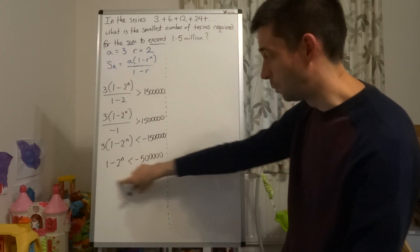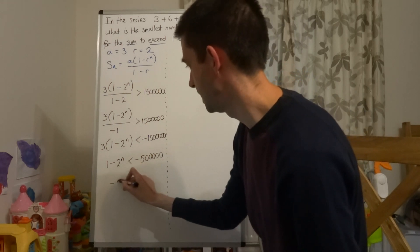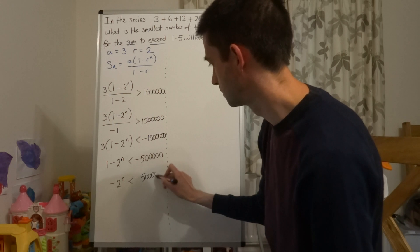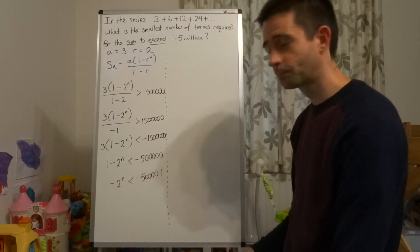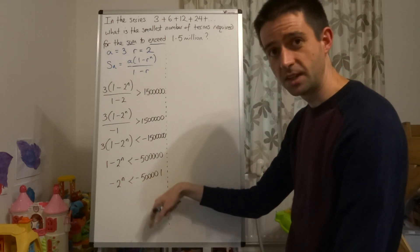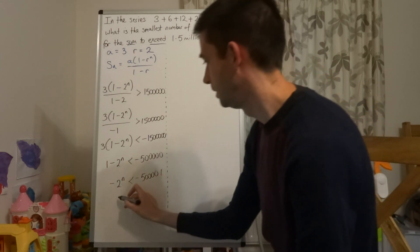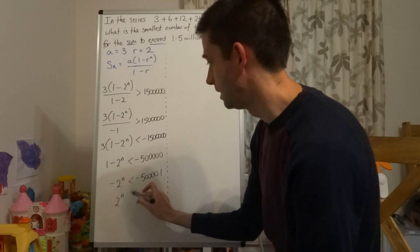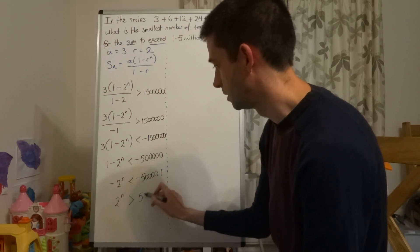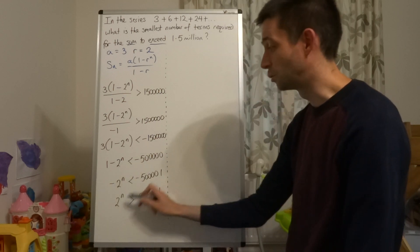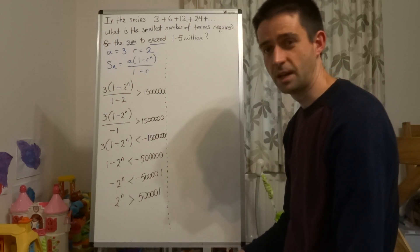We're going to subtract that 1. So we're going to have negative 2 to the power of n is less than negative 500,001. And then because we've got two negatives, we can divide both sides by negative 1 to get 2 to the power of n. Now, crucially, that will change the direction of the inequality.